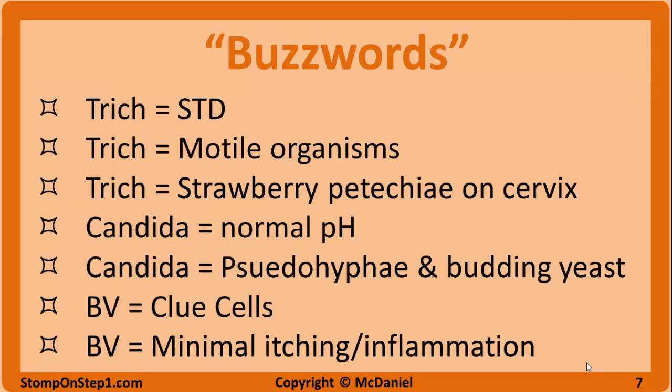To review, here are some buzzwords that should stand out in question stems. If you just know the info on this slide, you can probably get most of these questions right. Trichomonas is the only one of the three that is an STD and motile under a microscope. A strawberry cervix is also only present in trichomonas among these three diseases, although other diseases can cause cervical inflammation. Candida has budding yeast and pseudohyphae, as well as a normal pH, which makes it unique. BV has clue cells and minimal itching, which helps differentiate it from the other two.